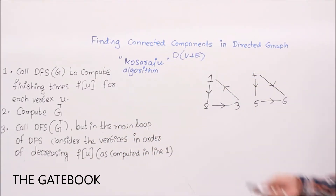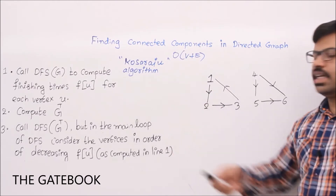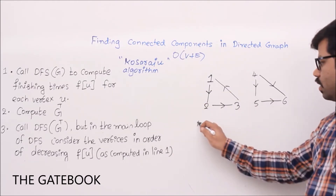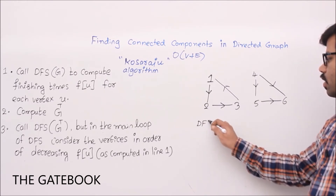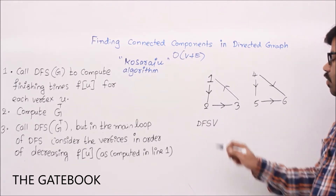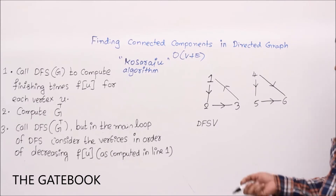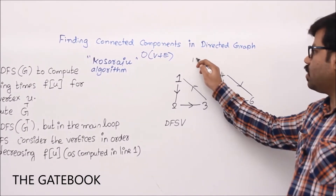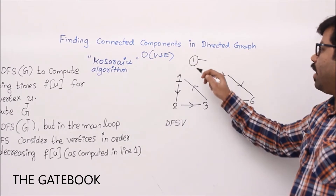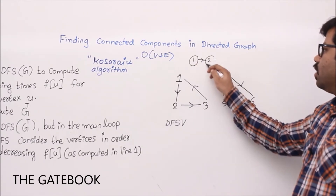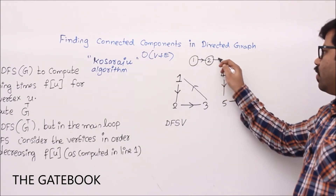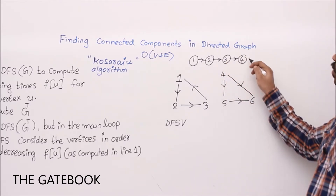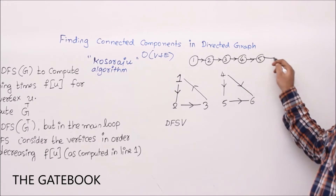The first step is calling DFS on G. We start DFS and assume this order: 1, 2, 3, 4, 5, 6. The adjacency list is: 1's neighbor is 2; 2's neighbor is 3; 3's neighbor is 1; 4's neighbors are 5 and 6; 5's neighbor is 6; 6 has no neighbors. This is the adjacency list.